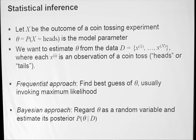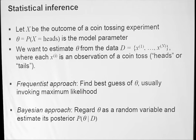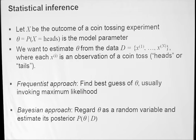So let's consider a random variable X which corresponds to an outcome of a coin tossing experiment. If you want to model that experiment statistically, you're interested in what would be the probability of the coin landing on heads. This probability will be denoted theta, and this will be our model parameter. If we want to estimate theta from the data, the data will be N experiments of tossing a coin — X1 to XN — where each Xi corresponds to one toss, and the values will be either heads or tails. You can have two different approaches to estimate this parameter.